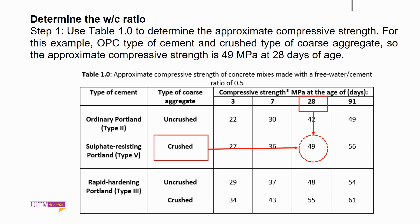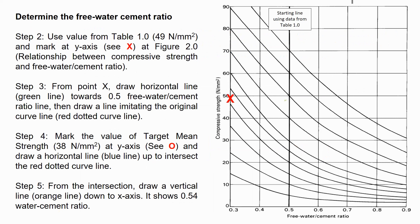The next step is to determine the water to cement ratio. Step 1: table 1.0 is used to determine the approximate compressive strength. For this example, we use OPC cement and crushed coarse aggregate, so the approximate compressive strength is 49 MPa at 28 days. Step 2: mark this value of 49 N/mm² on the y-axis of figure 2.0 at point X. Figure 2.0 shows the relationship between compressive strength and free water to cement ratio. Step 3: from point X, draw a horizontal green line towards the 0.5 free water to cement ratio line, then draw a line imitating the original curve — refer to the red dotted curve line.